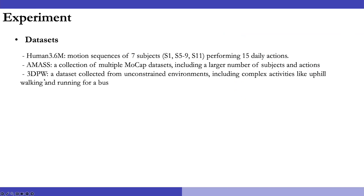During experiments, we consider three widely adapted datasets: Human 3.6M, AMASS, and 3DPW. We compute the mean per-joint position error at different future time steps to measure the human motion prediction quality.